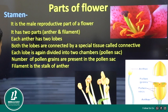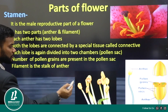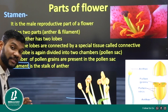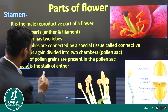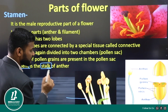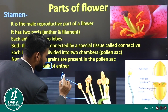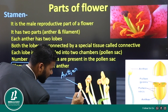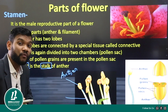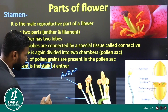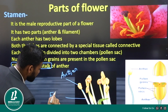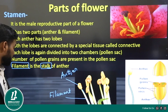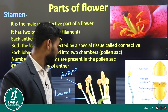The second part of the stamen is the filament. The filament is the stalk of the anther. So the filament is what supports and holds the anther. That is what is called the filament, and together with the anther, it forms the first essential part of a flower — the stamen.